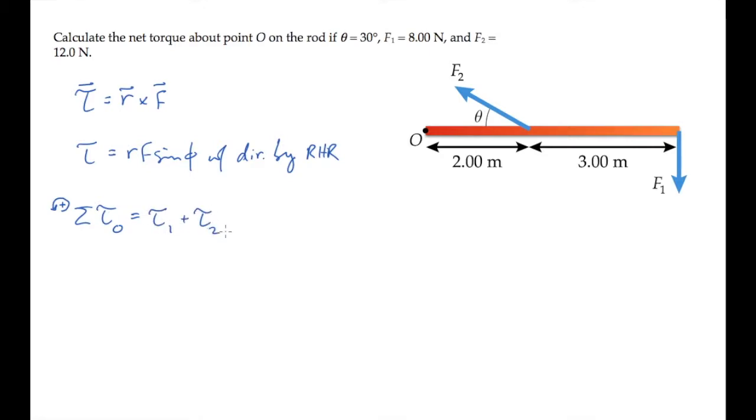Let's calculate those over here. For force one, the R vector goes from the pivot, point O, to the point where the force is applied. That vector is in this direction, so we see the angle between the R and the F vector, phi, is 90 degrees.